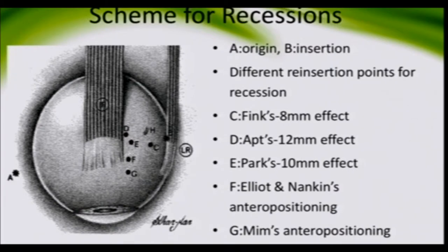Placement points are measured from the inferior rectus and lateral rectus. The new insertion can be posterior to lateral rectus, inferior to lateral rectus, inferior to inferior rectus, or lateral to inferior rectus. Fink surgery gives an 8-millimeter effect; classic Fink is 6 millimeters posterior and 6 millimeters inferior to lateral rectus. Parks gives a 12-millimeter effect. These are the described points for placing the anterior insertion of the inferior oblique.